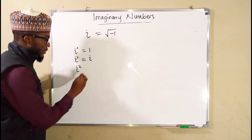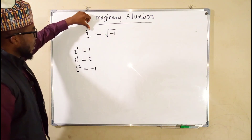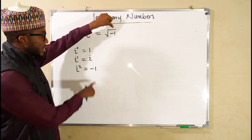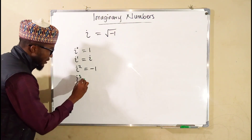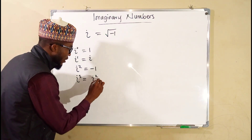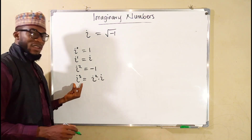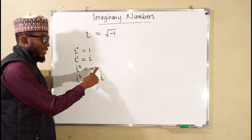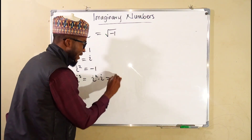i to the power of 2 equals negative 1, because if you square the square root of negative 1, the square cancels the square root, leaving only negative 1. i to the power of 3 can be written as i squared multiplied by i. Since i squared is negative 1, we have negative 1 times i, which equals negative i.